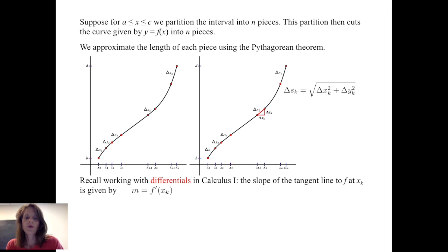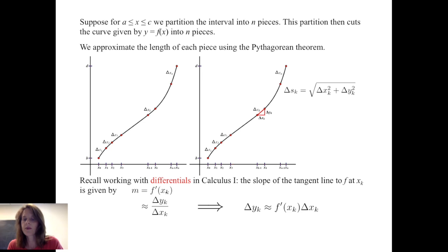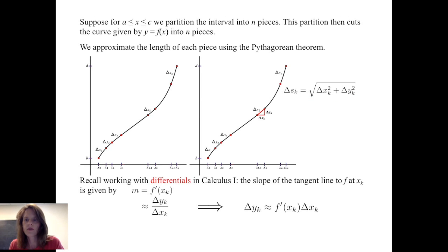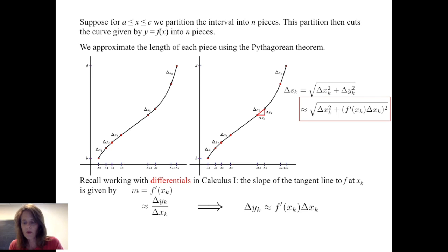Recalling from Calculus 1, we worked with differentials. The slope of the tangent line to f at x_k is given by m = f′(x_k), and we know this is approximately Δy_k / Δx_k. Therefore, solving for Δy_k, we get Δy_k ≈ f′(x_k) · Δx_k. Coming back to the formula for Δs_k, we can substitute for Δy_k² and get Δs_k ≈ √(Δx_k² + [f′(x_k) · Δx_k]²). We continue to work with this and perform some algebra.